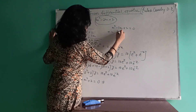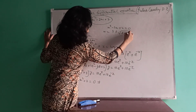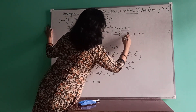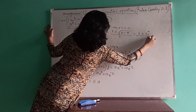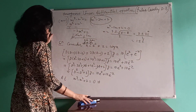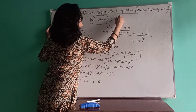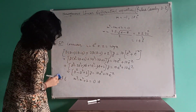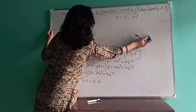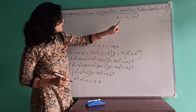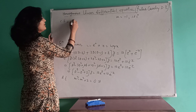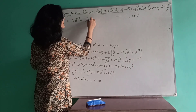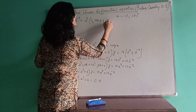So the roots are M equals minus 1, and M equals 1 ± i. We have one real root and two complex roots. Using the standard CF formula: CF equals C₁e^(minus z) plus e^z (C₂ cos z plus C₃ sin z). Since we have reduced the equation to y with respect to z, both CF and PI will be in terms of z.